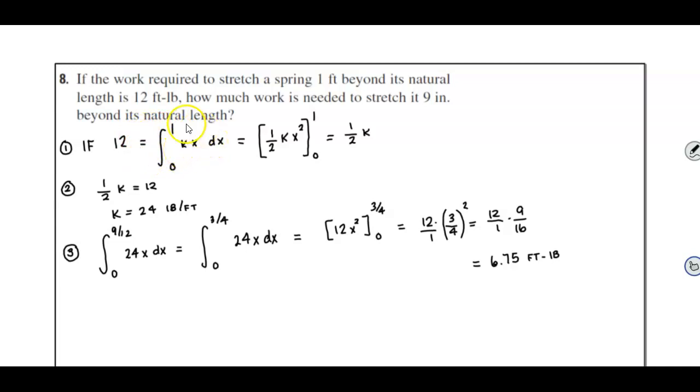Now, the antiderivative of this function is one-half kx squared going from zero to one. Plugging in zero is going to eliminate that, so plugging in one leaves us with one-half k. So now we know that one-half k is going to equal 12, and that's going to allow us to solve for k in step two.